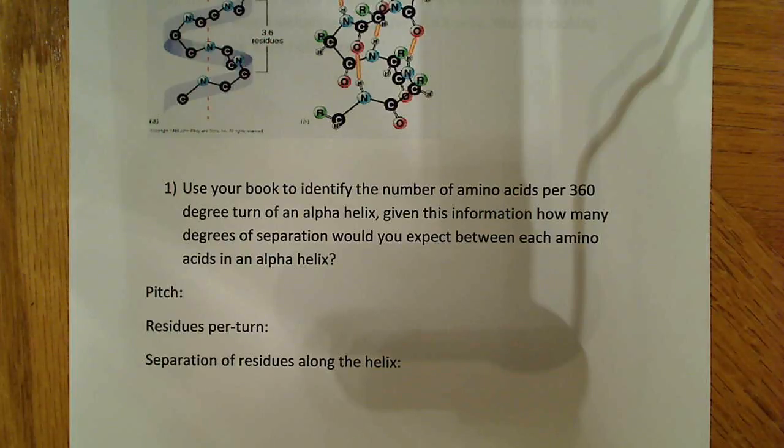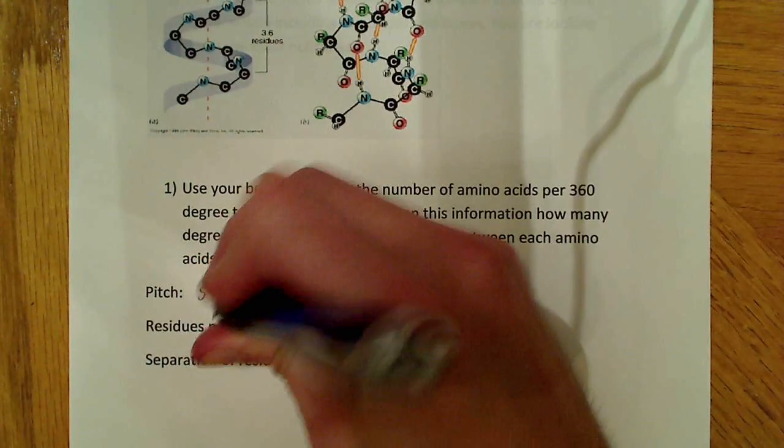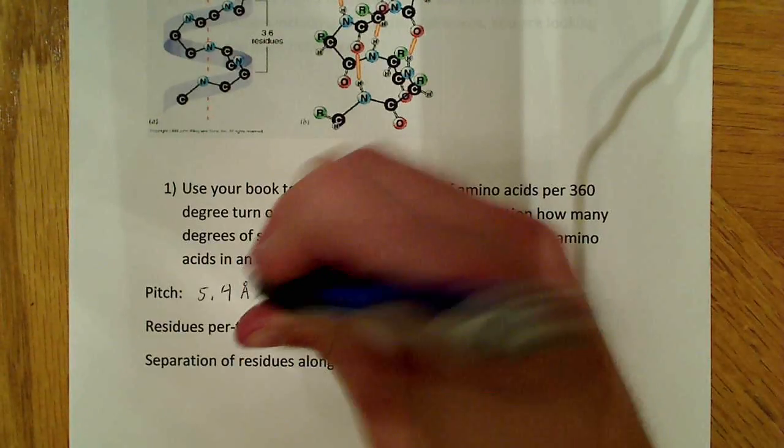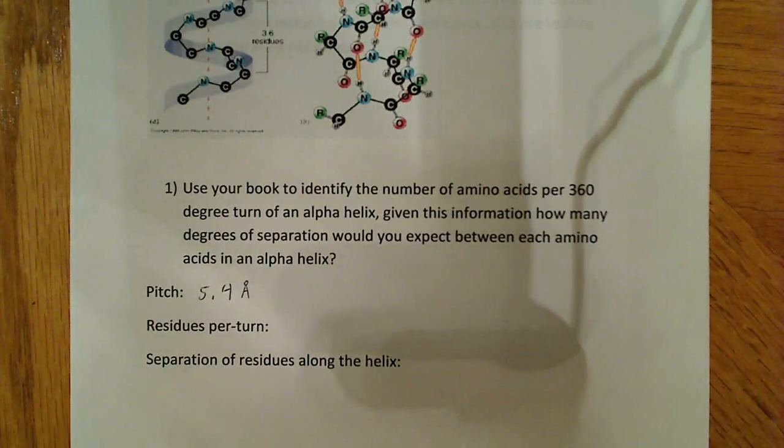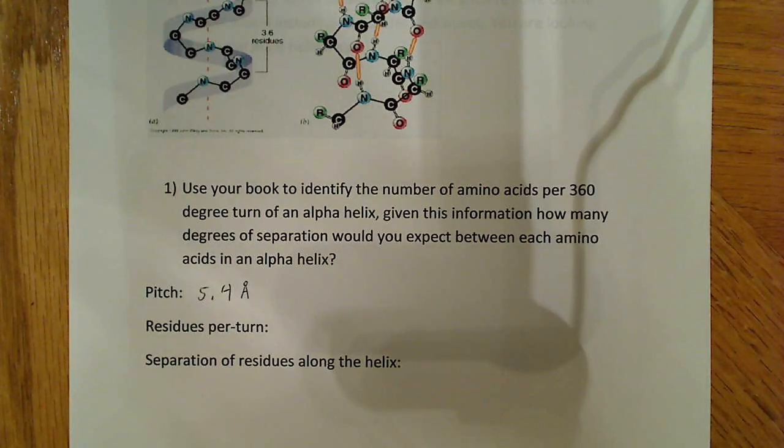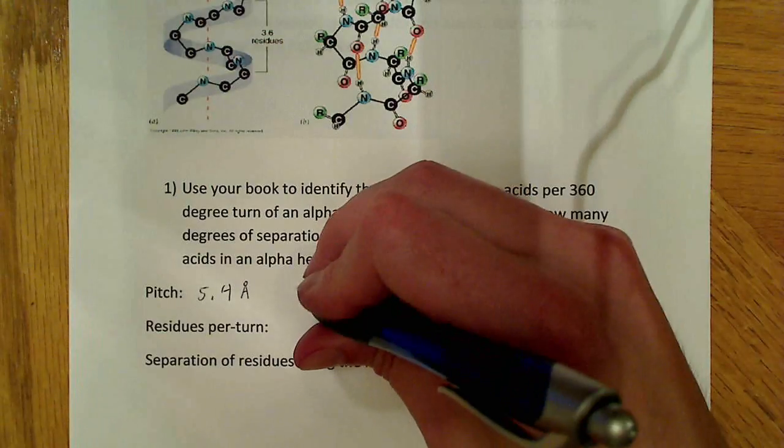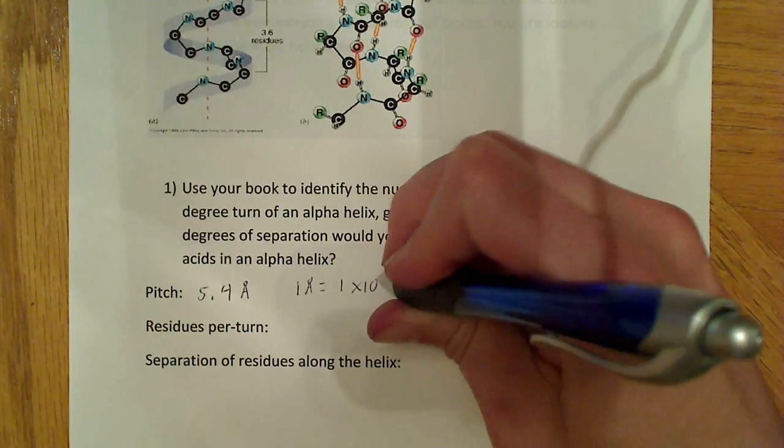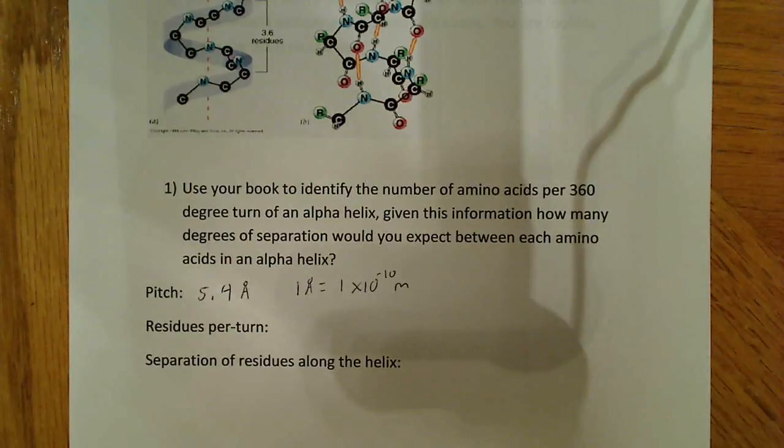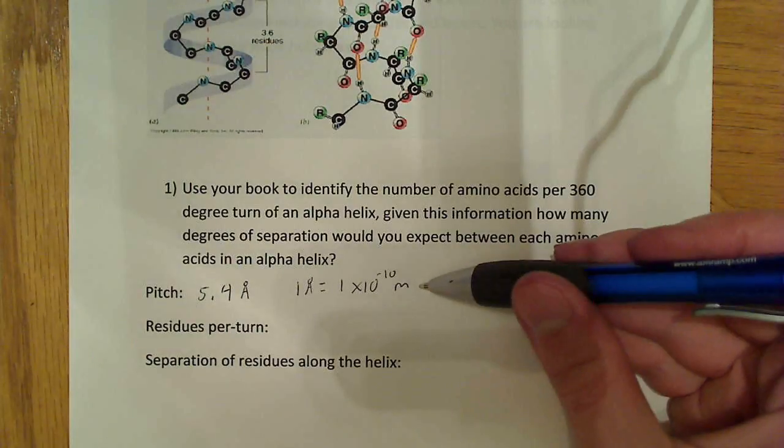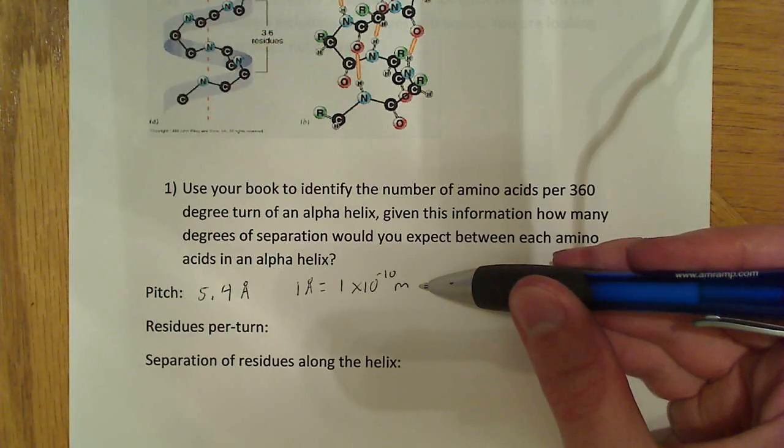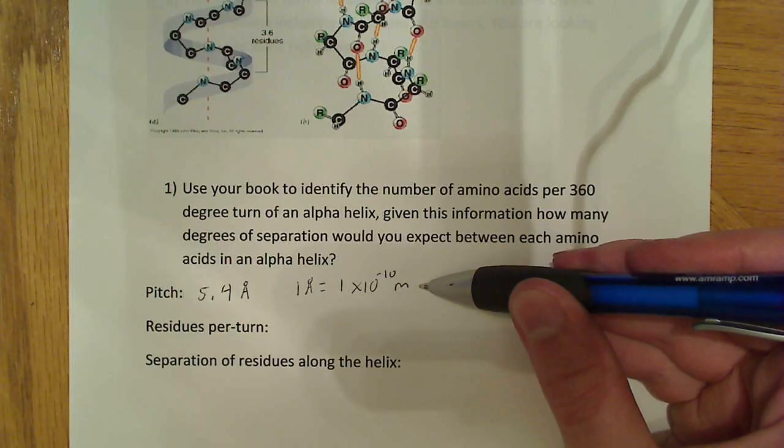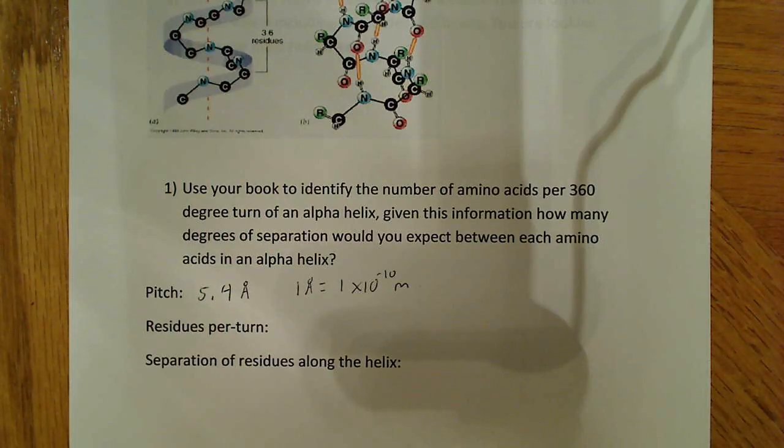So, I'm going to start with the pitch. And the pitch is just 5.4 angstroms. Now, you might say to me, well, what is an angstrom? So, I'll say 1 angstrom is equal to 1 times 10 to the negative 10th meters. So, the pitch is 5.4. And, you might ask, well, what the hell does the pitch tell us about the alpha helix? And, I'm going to tell you what it is. It's basically what it says is the structure repeats itself every 5.4 angstroms along the helix axis. So, we have repeating structure every 5.4 angstroms. That's important.